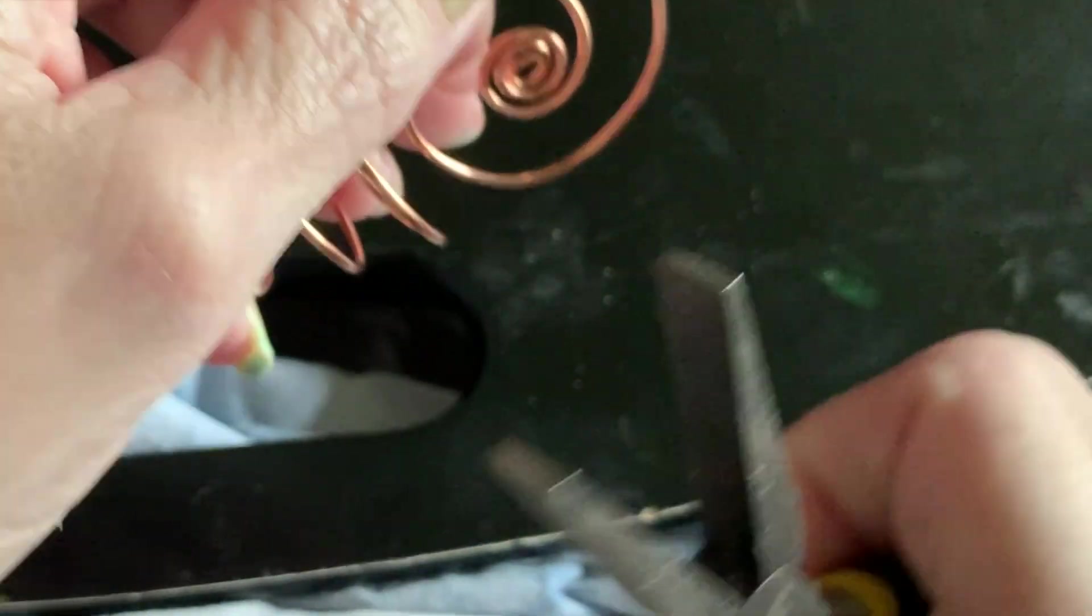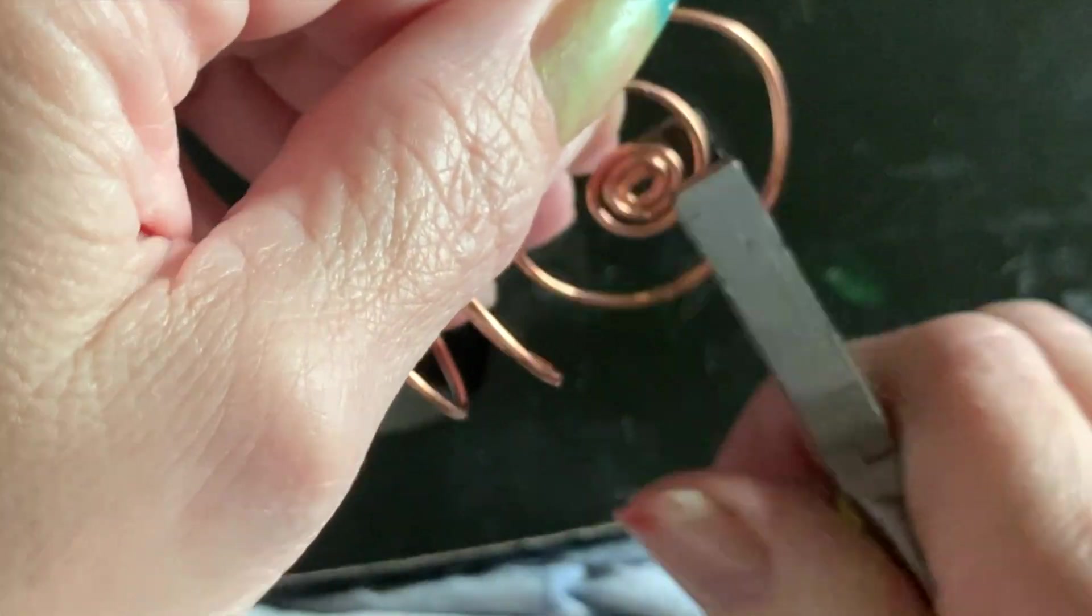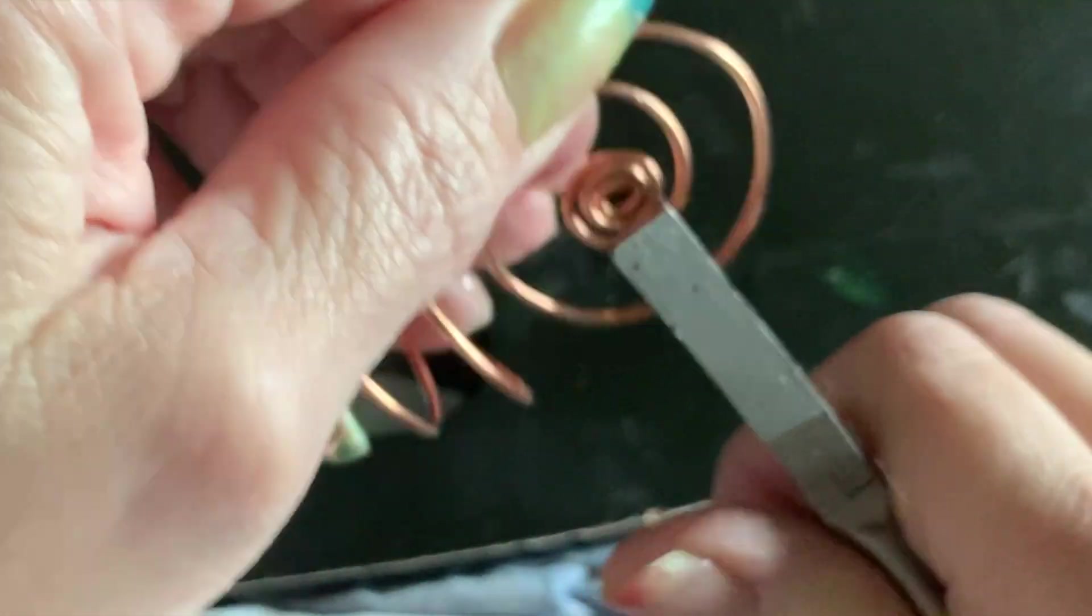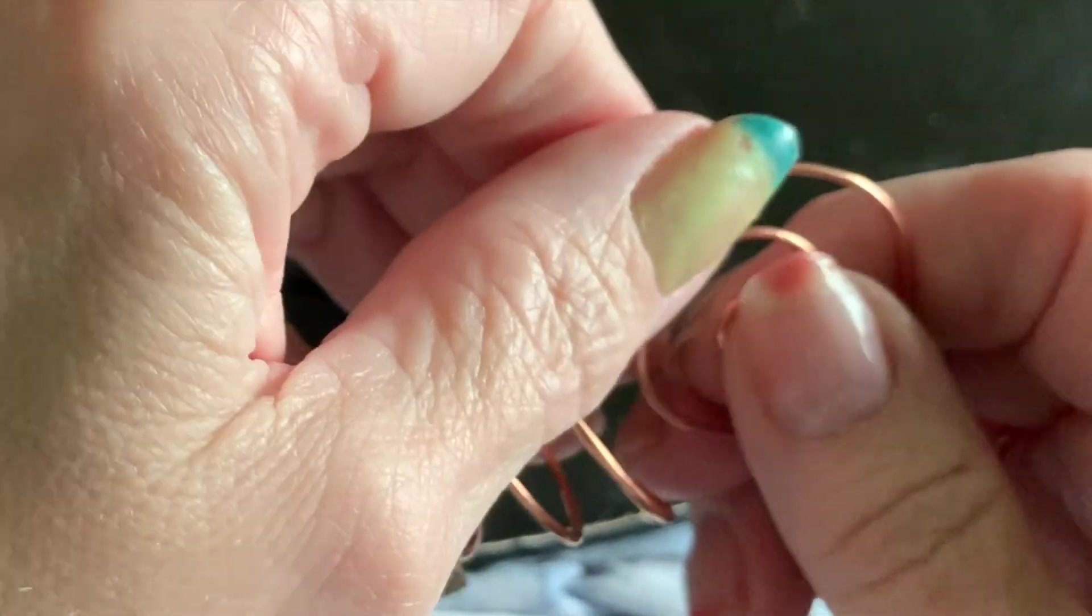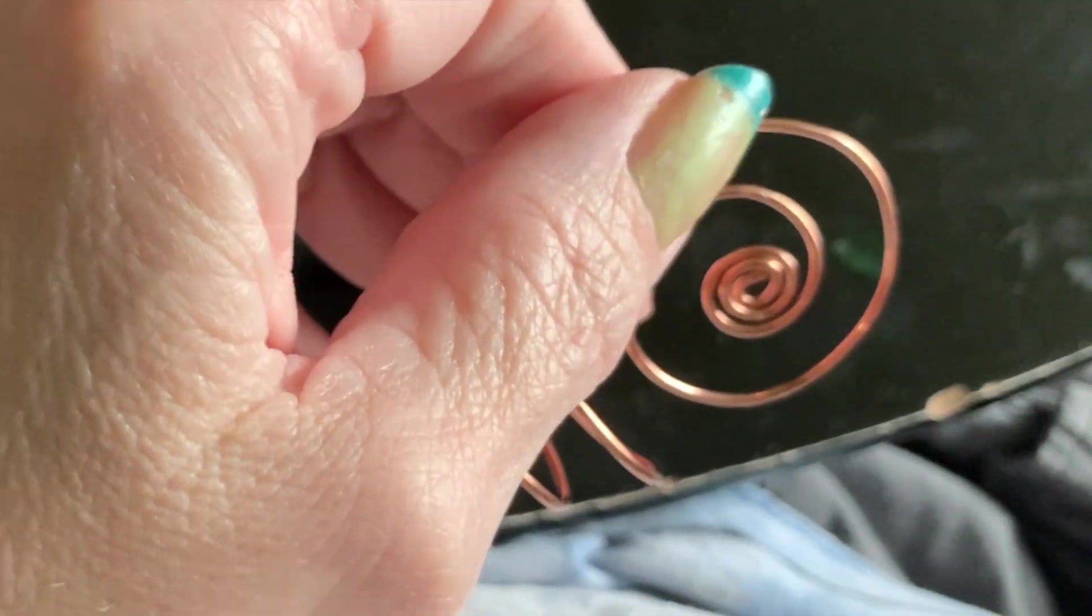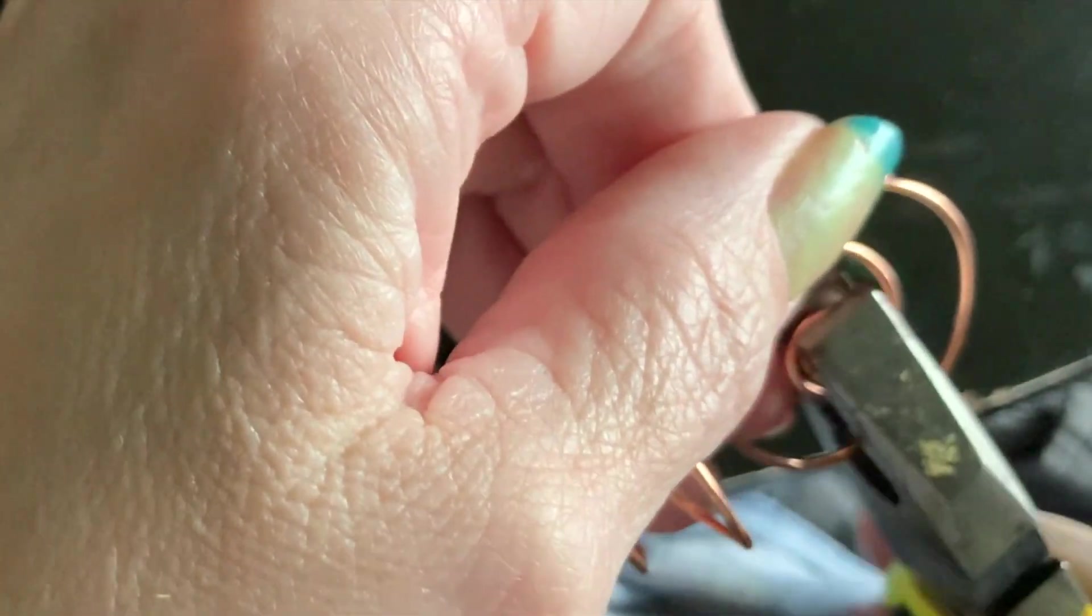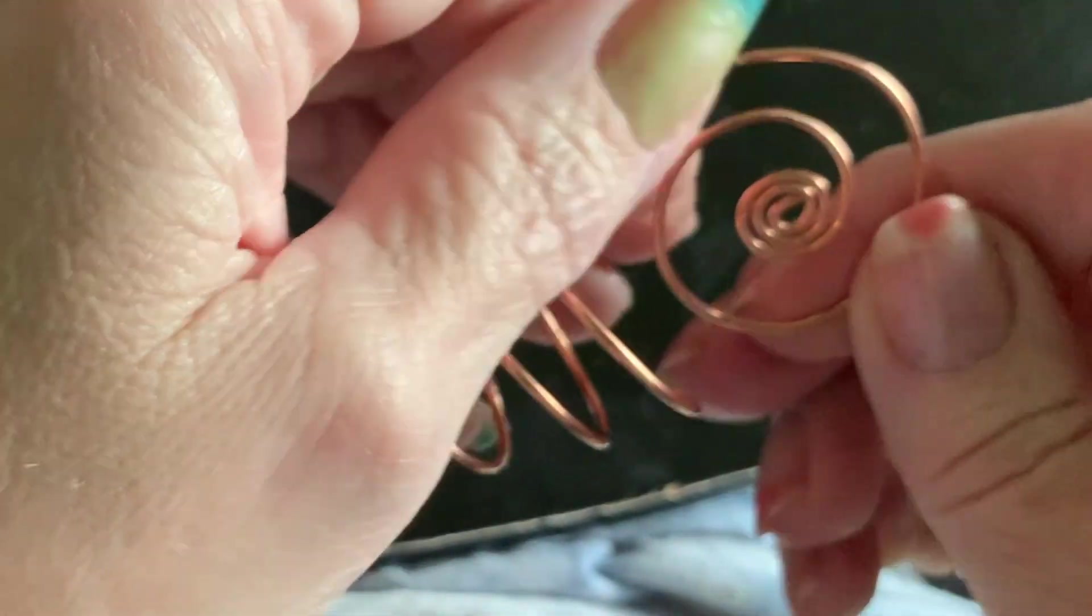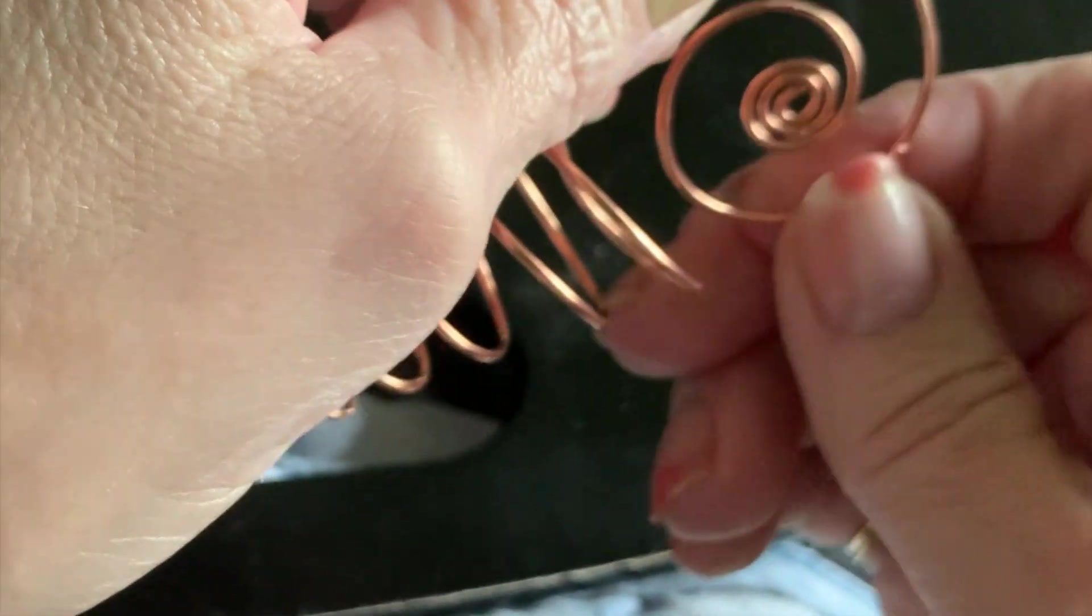As you can see, I'm trying to coax it into a really tight coil in the center. Then I took a larger pair of pliers and crimped it all together so it was all flat and connected to each other.